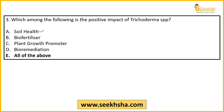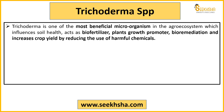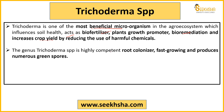Trichoderma improves soil health, acts as a bio-fertilizer, promotes plant growth, and aids in bio-remediation and crop yield increase — making it one of the most beneficial microorganisms for agriculture. It helps reduce the use of harmful chemicals and protects crops. It is fast-growing, so its effects come quickly, and its root colonization has positive effects.